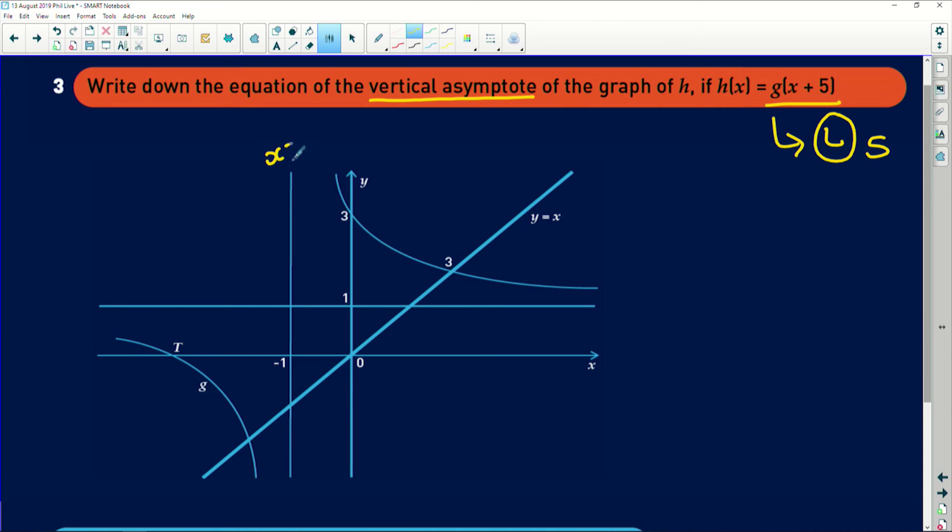So the vertical asymptote was given to us as x equals negative 1. If we shifted this left 5 units, we would have to subtract 5. So if we shifted it, we'd have 1, 2, 3, 4, 5, somewhere along here is the new asymptote of h. The vertical asymptote would sit at negative 1 minus 5, because we're shifting left 5 units, is negative 6.